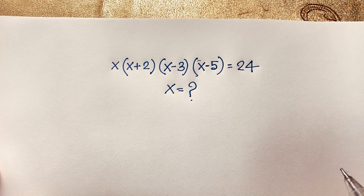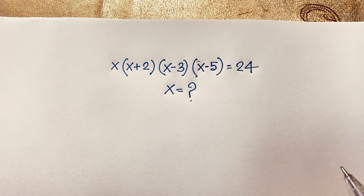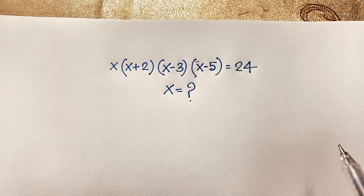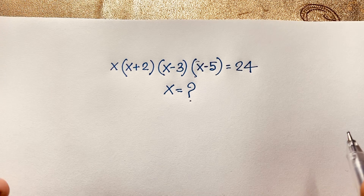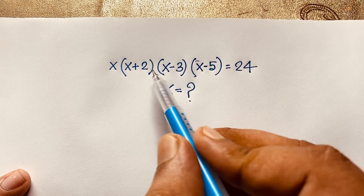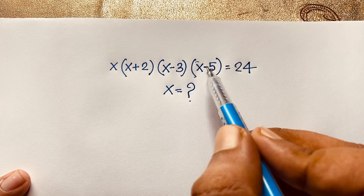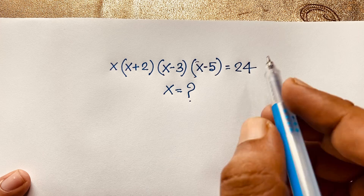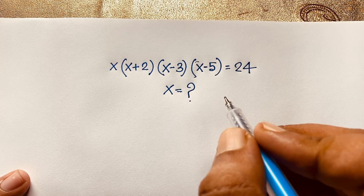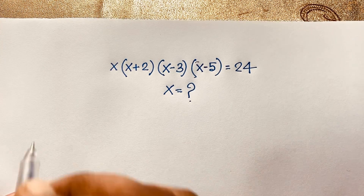Hello everyone, welcome to Russell's Classroom. Today we are solving an interesting math olympiad question which is x times (x+2)(x-3)(x-5) is equal to 24. x is equal to what? How to solve this math olympiad question?